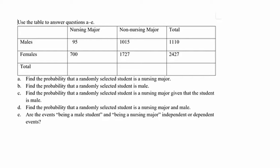Fortunately, totals for males and females are given. We are looking for nursing majors and non-nursing majors only. So if we find all the totals, it's going to be 795, 2742, and 3537 as the total.